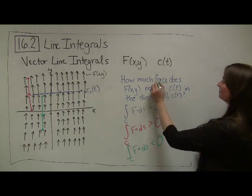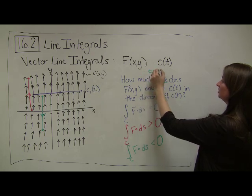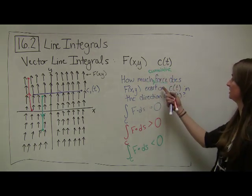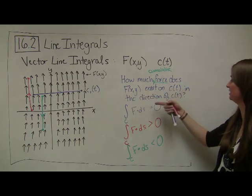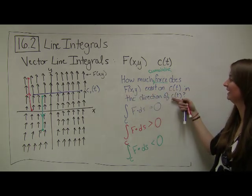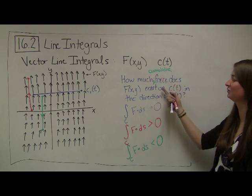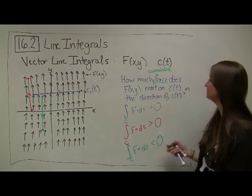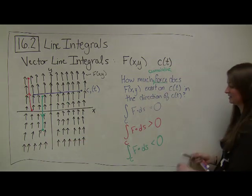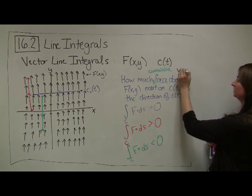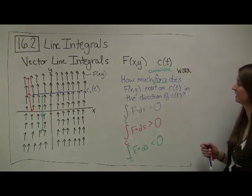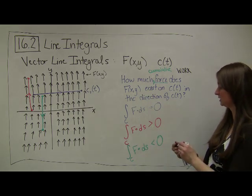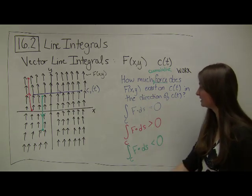How much, and when I say force, really what I should say, I should say cumulative force. How much cumulative force does this vector field exert on C of T in the direction of C of T? And what's our other word for cumulative force? How much force that's being done as I travel along some certain period of time? One way that physicists call that is work. How much work is being done by my vector field as I travel along my path?